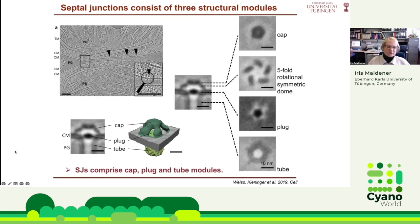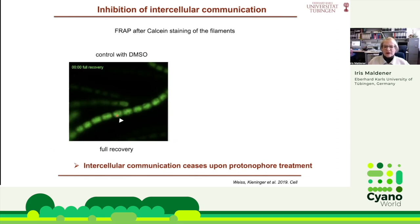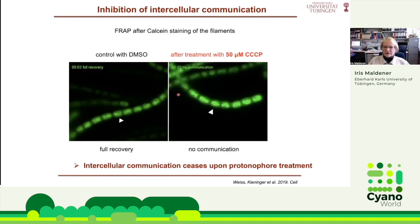We then thought about which conditions could lead to a structural change in the communication of the cells, and suggested our PhD students perform FRAP experiments using inhibitors. A FRAP experiment — fluorescence recovery after photobleaching — involves staining the filament with a dye that becomes fluorescent inside the cell and cannot escape. We bleach one single cell with a laser beam and observe how the dye returns, because it enters from neighboring cells due to cell-cell communication. When we added the ionophore CCCP as an inhibitor of the proton gradient, the FRAP recovery of dye never occurred.